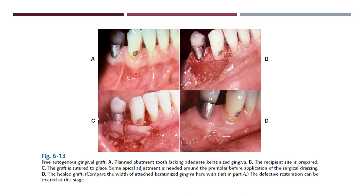Free autogenous gingival graft: where there is not enough keratinized gingiva, the recipient site is prepared, the graft is sutured in place, some apical adjustment is needed around the premolar region before application of a surgical dressing, and then you can see a healed graft with better attachment. Laterally positioned graft: where we see localized recession around the central incisor, adequate width of keratinized tissue from the donor side is taken, cut and placed, sutured, and then healing takes place.